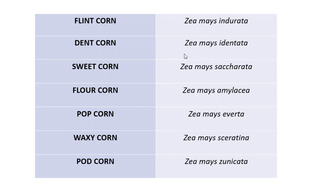Dent corn is called Zea mays indenta — 'dent' can be found in 'indenta.' It is mostly grown in the USA and its kernel shape resembles a tooth. Sweet corn is Zea mays saccharata. Flour corn is Zea mays amylacea. Popcorn, used for preparing popcorn and cornflakes, is Zea mays everta. Waxy corn is Zea mays ceratina. Pod corn, which is primitive, is Zea mays tunicata. All these types are classified based on the nature of the endosperm.